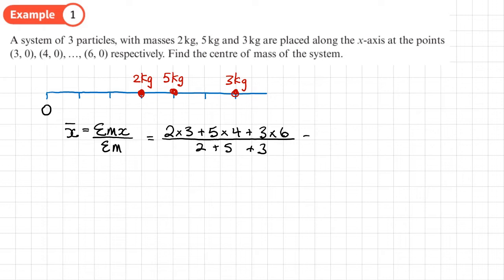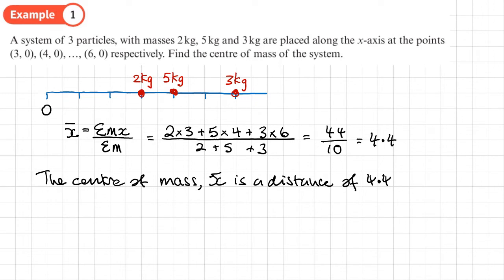So it gives me 44 divided by 10, which is 4.4. So that means that the center of mass, x bar, is a distance of 4.4. Now we haven't been given any units for this, so just 4.4 from O. And we could write that as a coordinate. So this average moment is (4.4, 0).